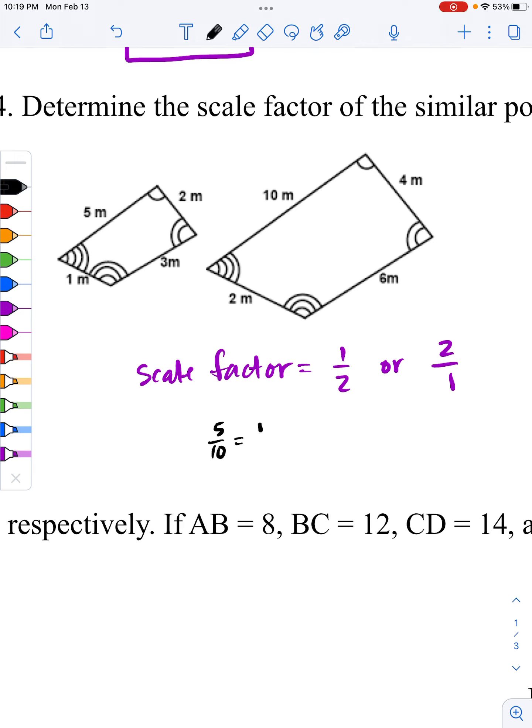We could write that scale factor, 5 to 10. 5 over 10 is equal to 1 half, which is how you get this answer. Or if you do this from left to right, this becomes 10 over 5, which is equal to 2 over 1. And that's how you get the other scale factor. Both are technically correct.